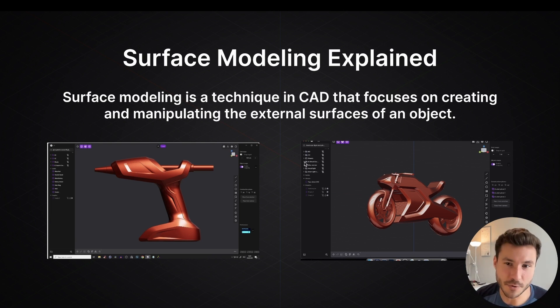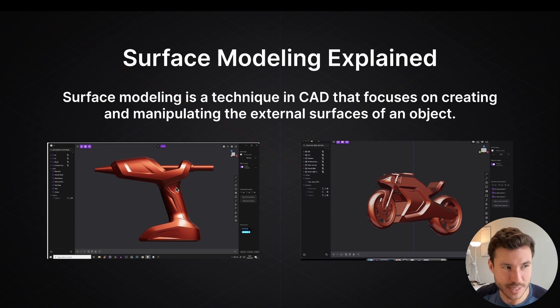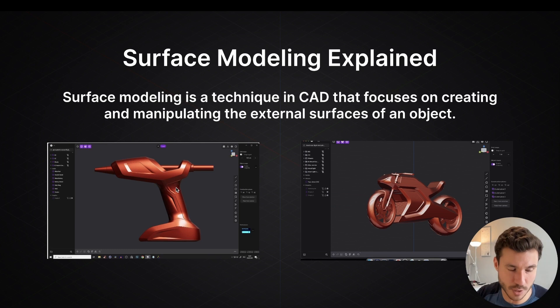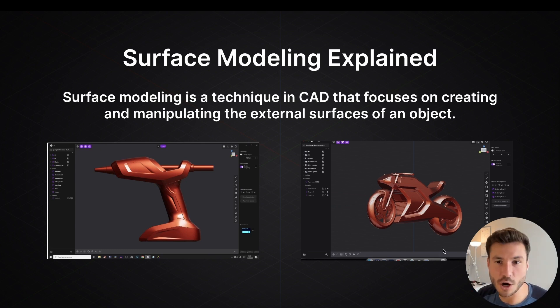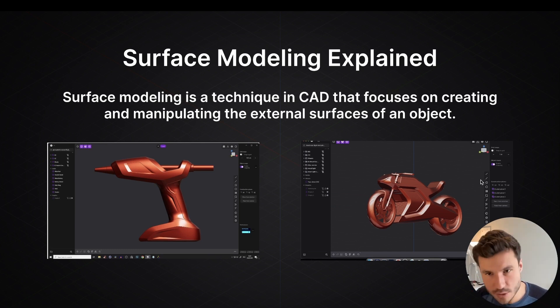Just from my course, some examples — on the left, you see a glue gun, an industrial tool, and on the right, a motorcycle concept. Everything you see on the outside is exactly what surface modeling is about.